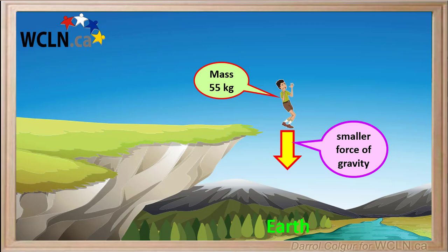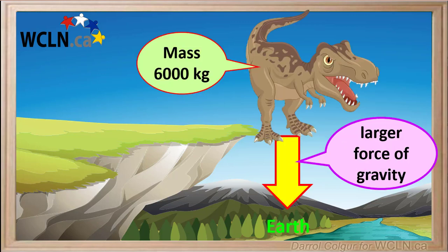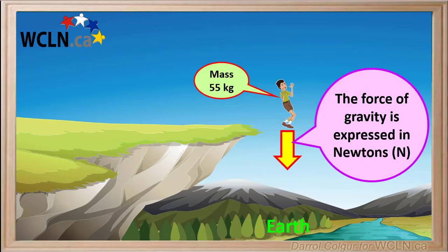Now we'll return to the force of gravity. A lower mass object like a 55 kg boy experiences a smaller force of gravity than a Tyrannosaurus rex, which has a mass of 6,000 kg. The force of gravity, like other forces, is expressed in units called Newtons, abbreviated with a capital N.